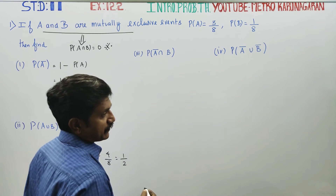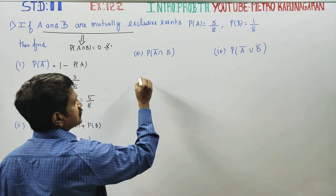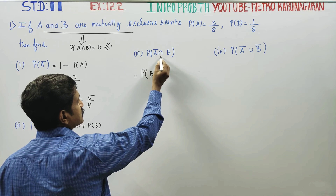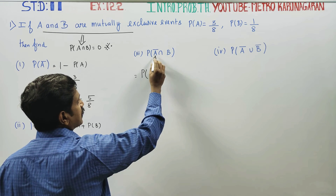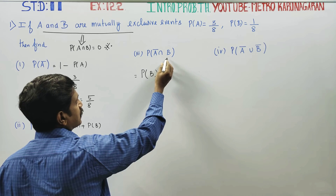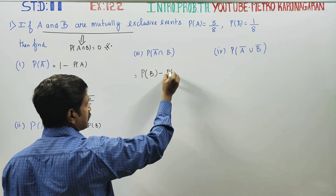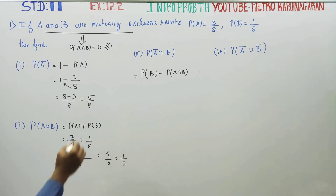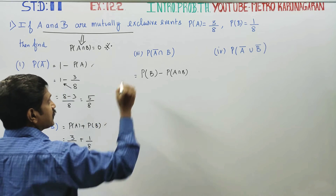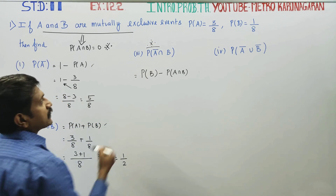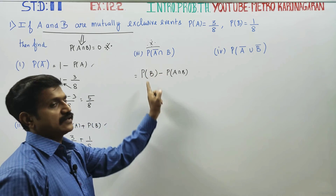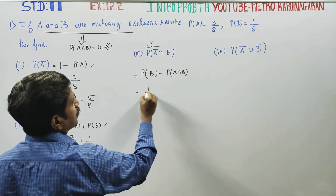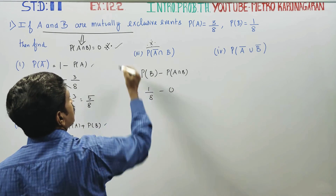Probability of A dash intersection B. Using the formula, A dash intersection B can be expressed using the 10th formula from the textbook. From the 11th formula reference, A dash intersection B dash equals A dash minus A intersection B. Probability of B is 1 by 8 and A intersection B is 0.